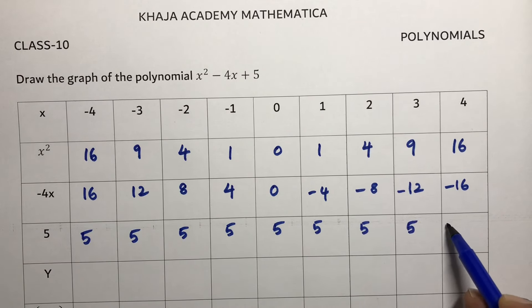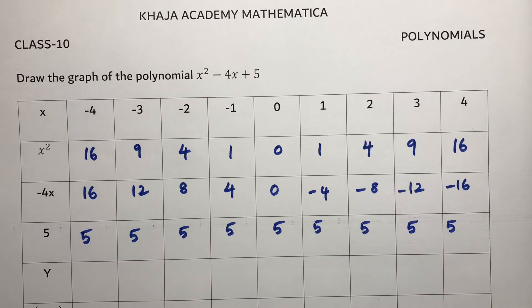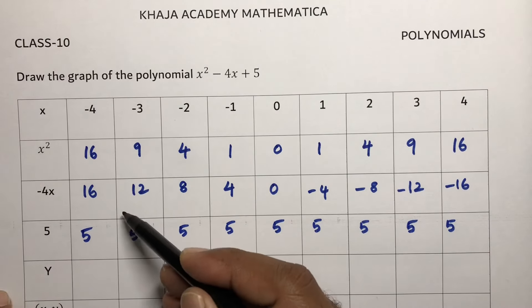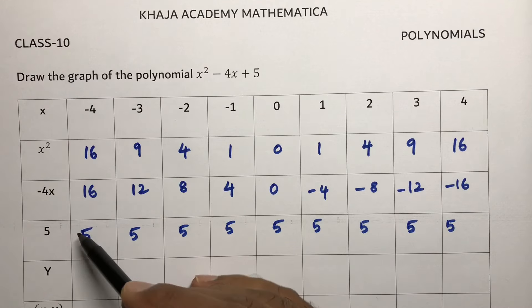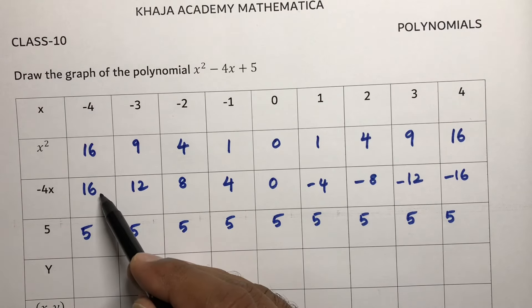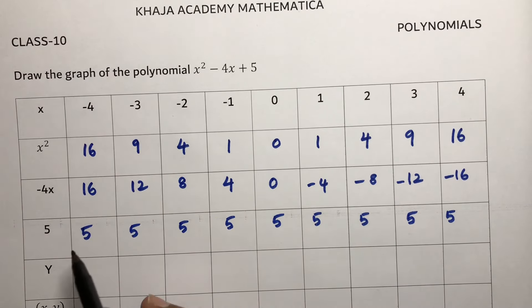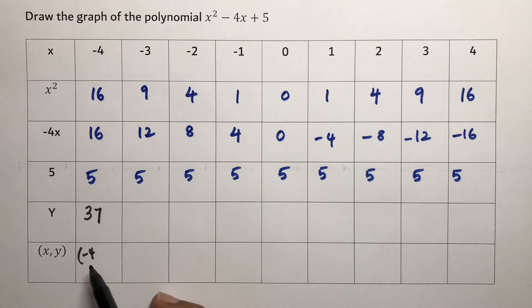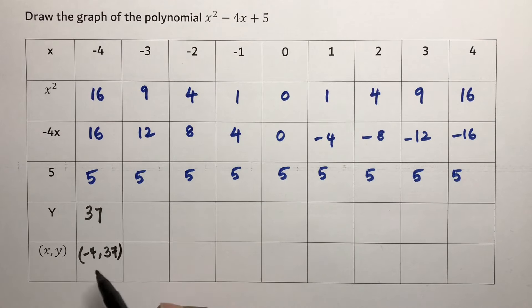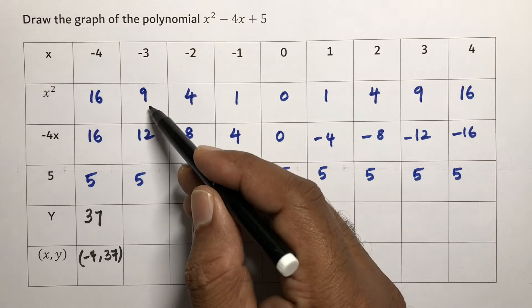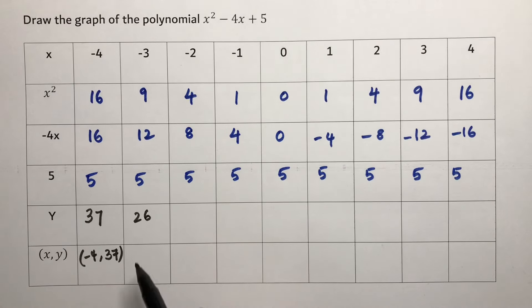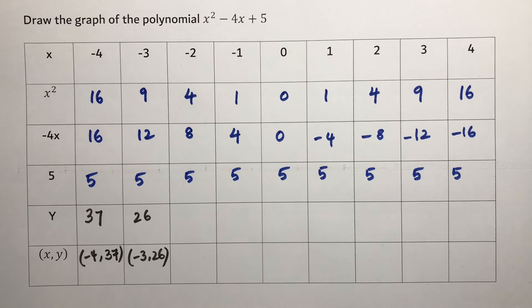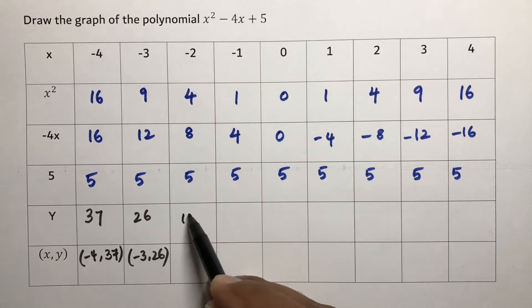Keep the constant as 5. Now the y value is the sum of x², -4x, and 5. For x = -4: 16 + 16 + 5 = 37. For x = -3: 9 + 12 + 5 = 26.